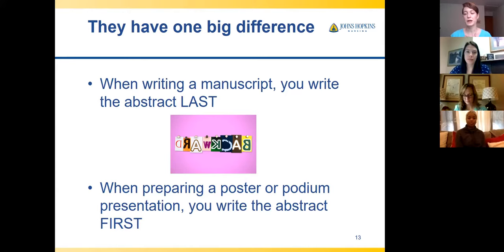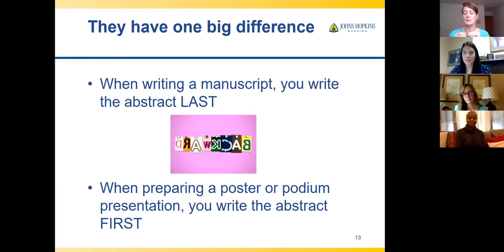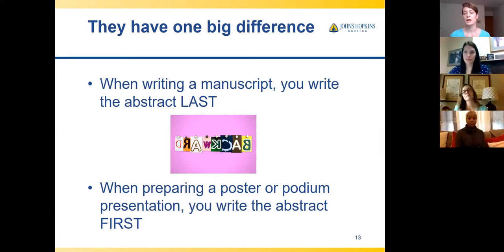I've seen people try to use the poster/podium abstract for a paper, thinking it'll save time — it does not. You end up trying to finagle all the little pieces. It's much easier to set that aside and, once you've written the paper, pull out a couple sentences from each section that convey the overall message of that section.